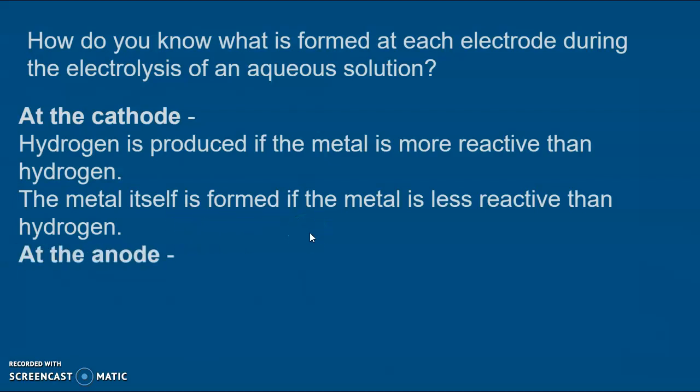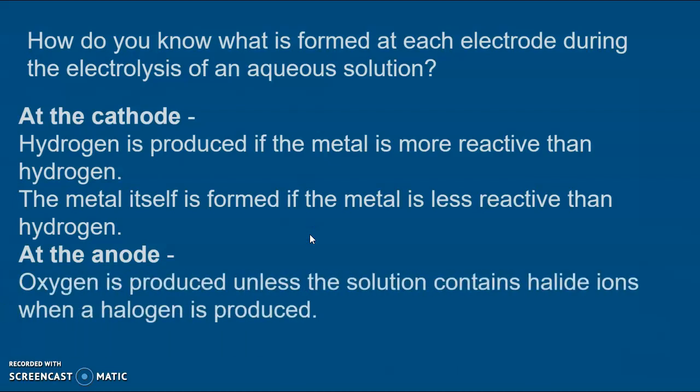At the anode we don't need to remember any reactivity series, all we need to remember is that you always get oxygen unless the solution is a chloride, bromide or iodide, generally a halide ion. If you've got chloride then chlorine will be produced, if you've got bromide then bromine will be produced, and if you've got an iodide then iodine will be produced. That's all there is to it at the anode.